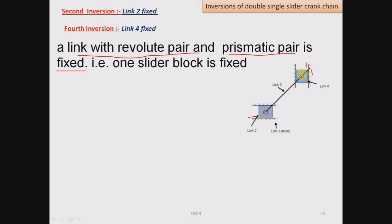So when we fix link number 4, we will get the same kind of inversion. So for double slider crank chain, the second inversion and fourth inversion are the same, which is obtained by fixing one of the slider blocks.